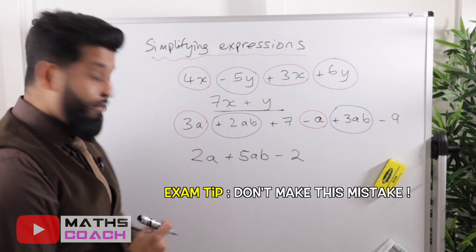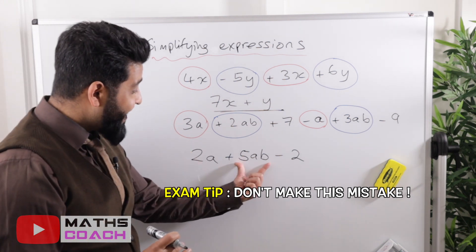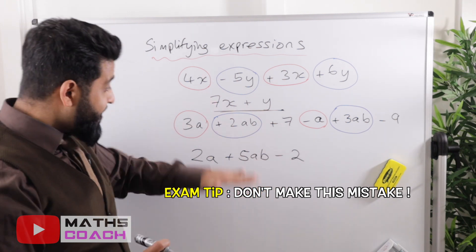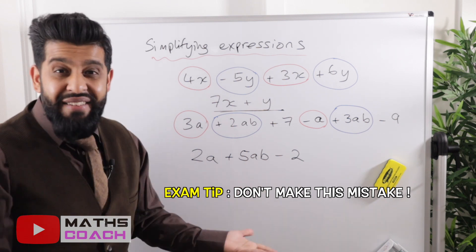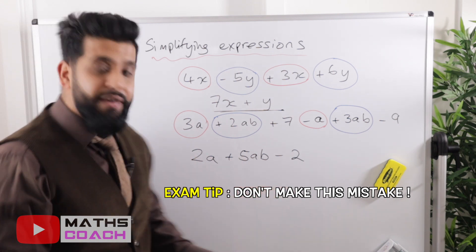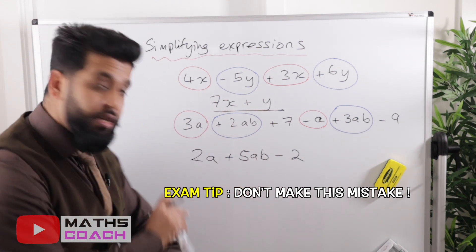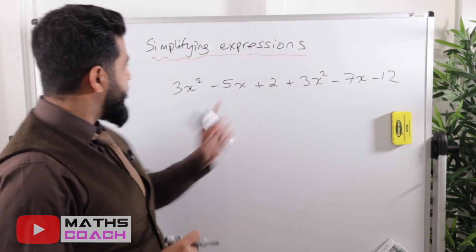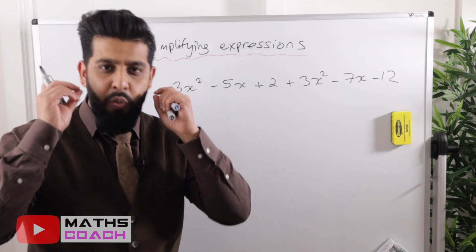A common mistake I see students make repeatedly is that after doing everything correctly, they start adding coefficients from different families together — writing something like 7a or 7ab. Be very careful: 2a, 5ab, and minus 2 are not the same term. Do not add them. When you have collected all like terms, you are done — you have simplified.